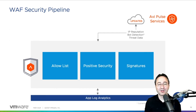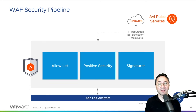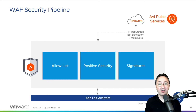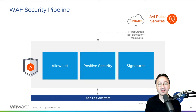To understand how the signatures work, we first have to understand the RAV security pipeline. It consists of three modules: the allow list, the positive security, and the signatures. All of them work together to provide the full application firewall protection. These are supported by the industry-leading AppLock analytics provided by the RAV platform.